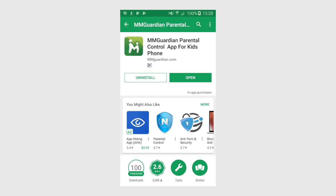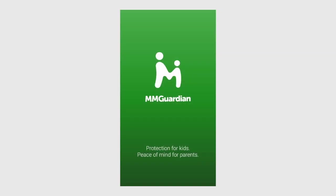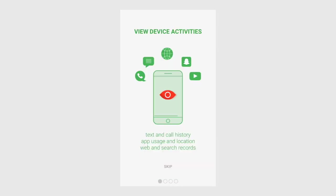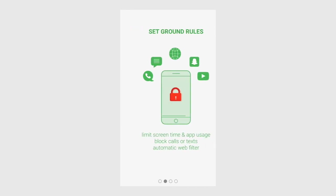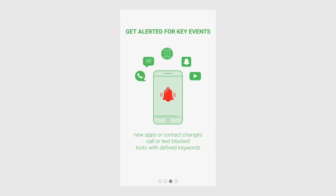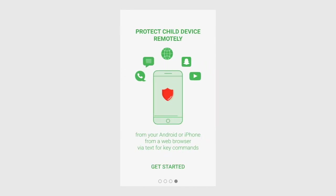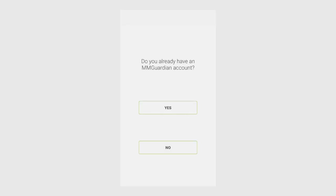Now you can open up the app. You'll see screens describing some of the MMGuardian functions. Either tap Skip on the first screen, or swipe right to left to view the screens. On the last one, tap on Get Started.